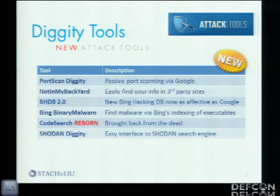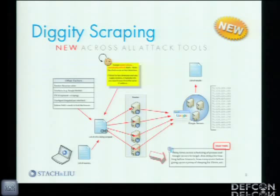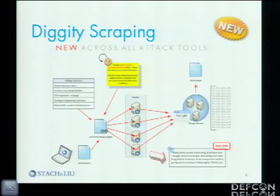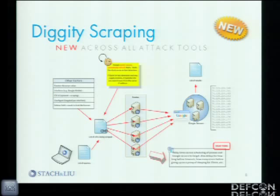I want to get right into some of the new tools we just released. But before that — until this version we had the Bing API hooked up for Bing Diggity and the Google Custom Search API for Google Diggity. But now that Bing has moved to a pay model, and just to get the number of results we really want, we've implemented Google scraping across all the attack tools — which was no easy task. I spent quite a bit of time making it possible to do thousands and thousands of queries against Google scraping effectively. We built that into the actual engine for all tools, so it's all completely free — you don't have to sign up for APIs.